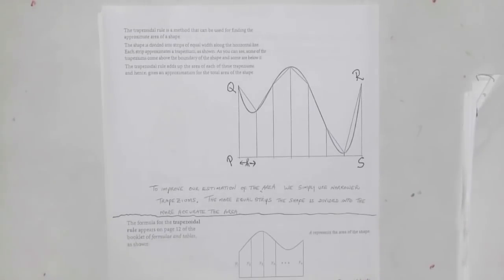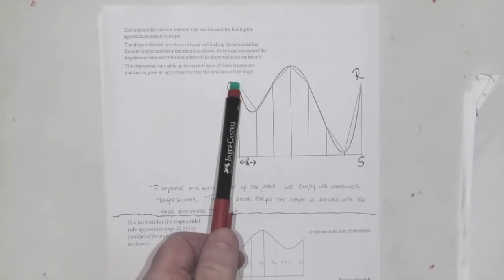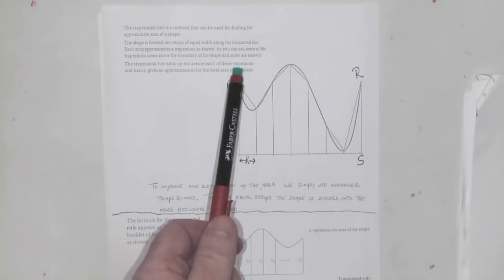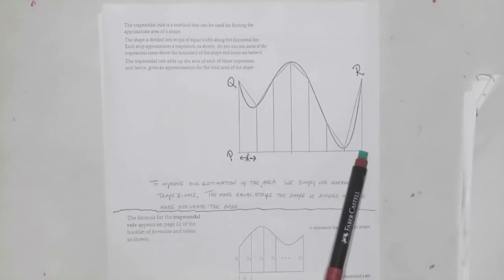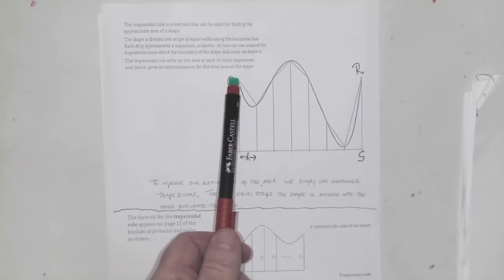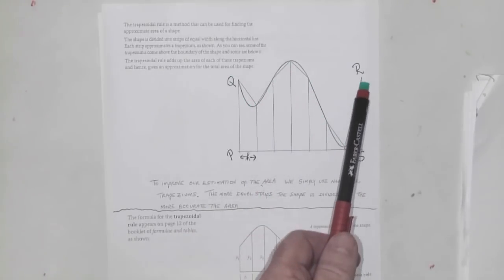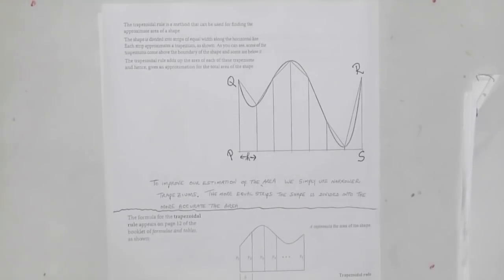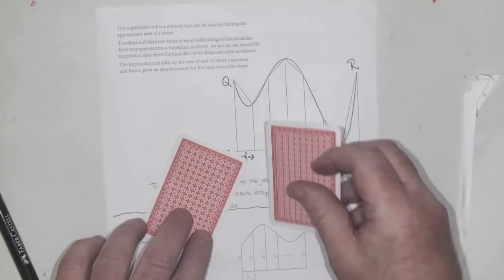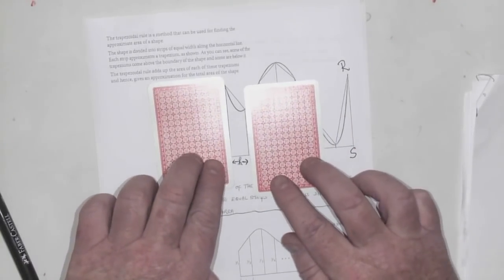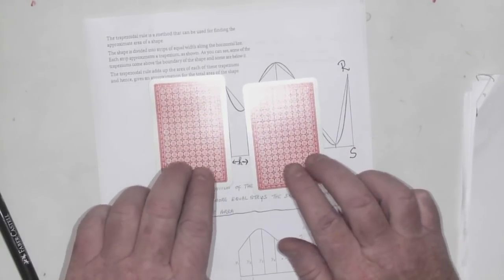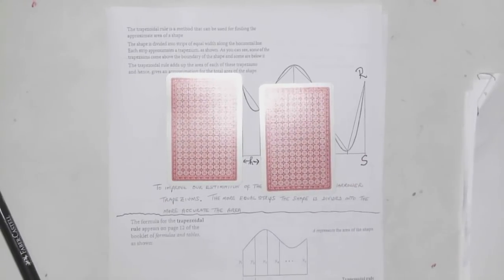Next, I'm looking at a shape from P to Q, then P to S, then S to R, and we're trying to find the area between those three straight lines and the curve. It's quite awkward to do, but there's a sneaky way: we divide the shape up into trapeziums.